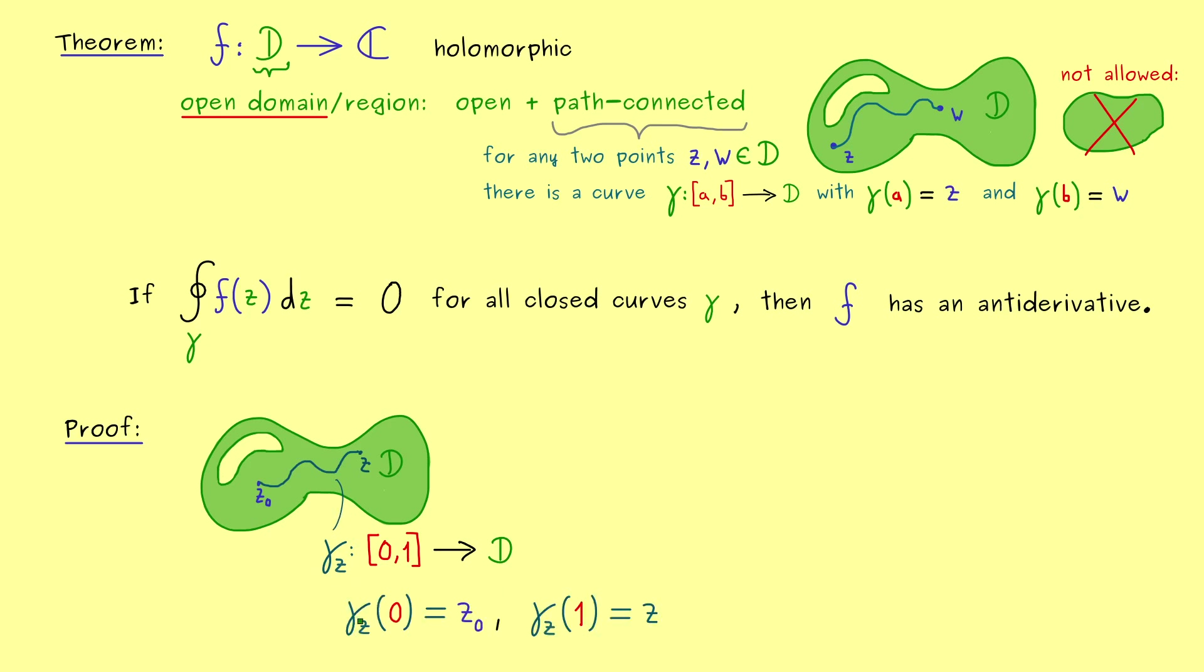So in summary you see, gamma_z of 0 is z₀, and gamma_z of 1 is z. And the existence of such a curve gamma_z is guaranteed by the path connectedness. Okay, now by using this curve gamma_z, we can immediately define our antiderivative.